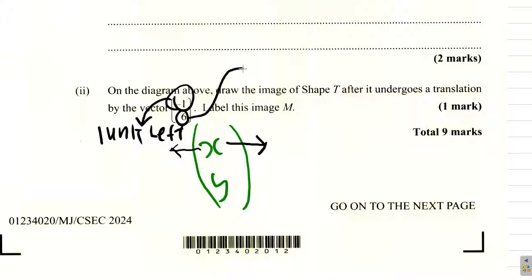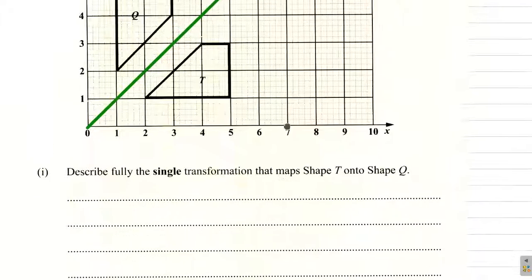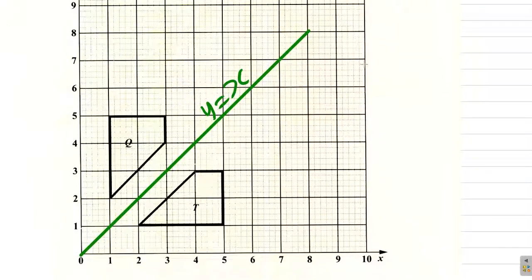And this 6 means y. Remember, y goes up for positive and down for negative. 6 means you're going to move 6 units up — it's positive, so it's up. If the 1 was positive it would be 1 to the right, but since it's negative it's 1 to the left. If the 6 was negative it would be 6 units down, but since it's positive it's 6 units up. So the translation vector is negative 1, 6.